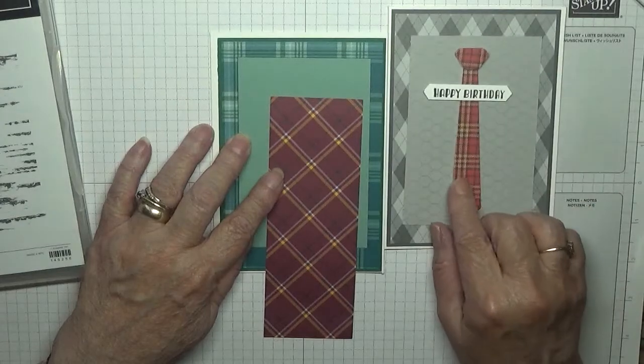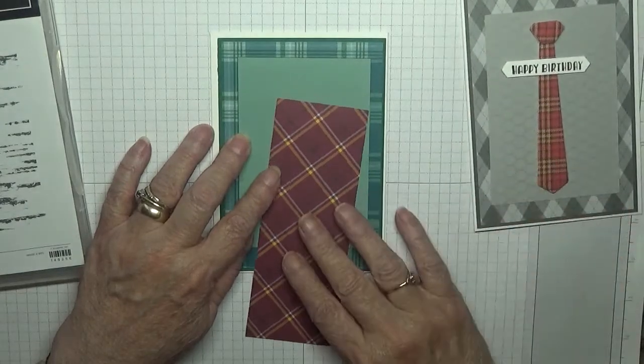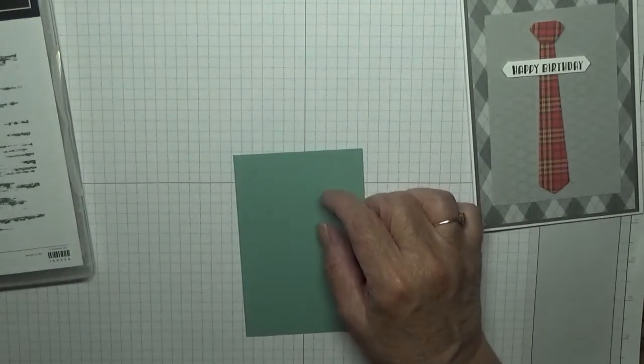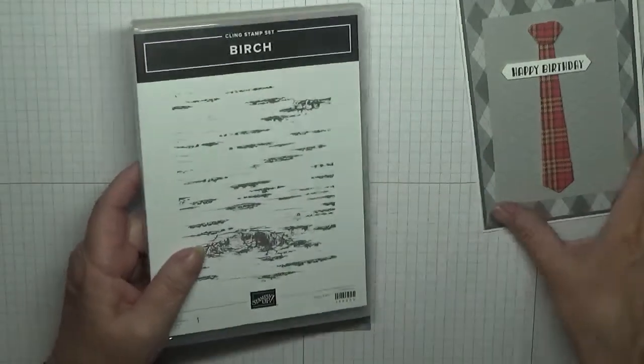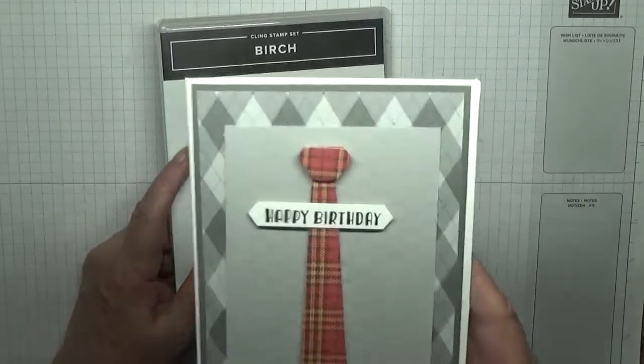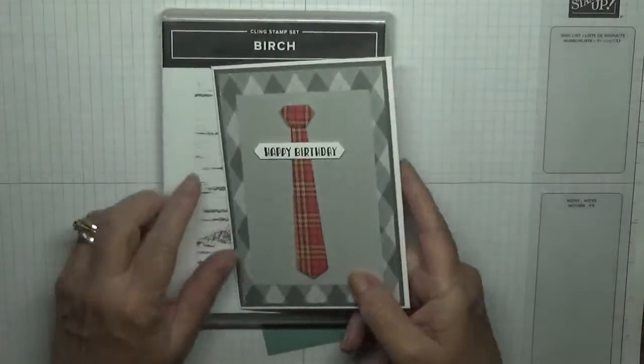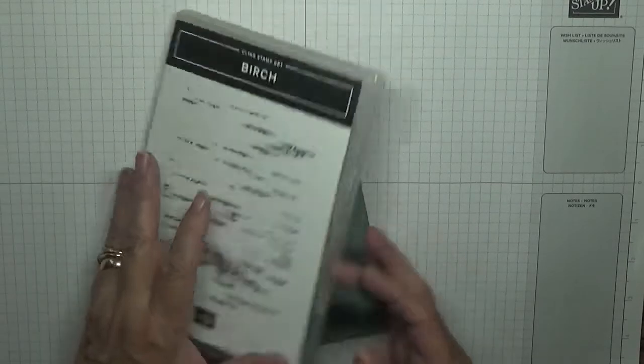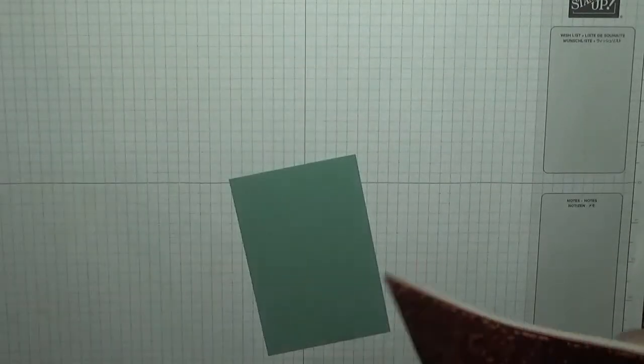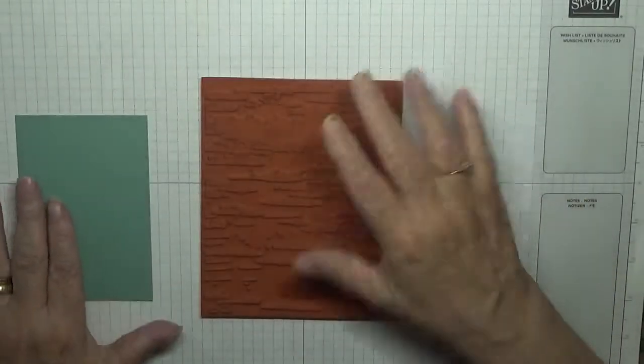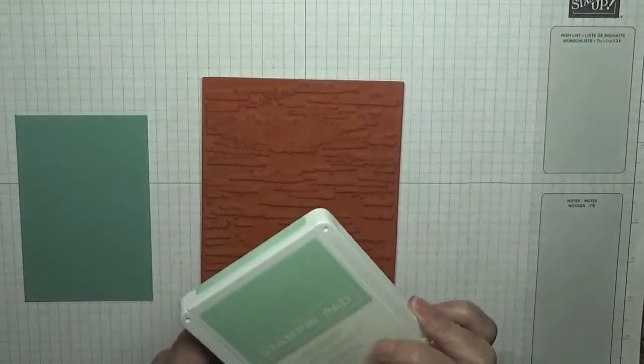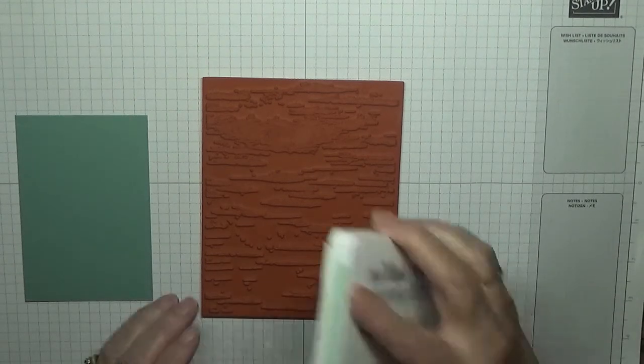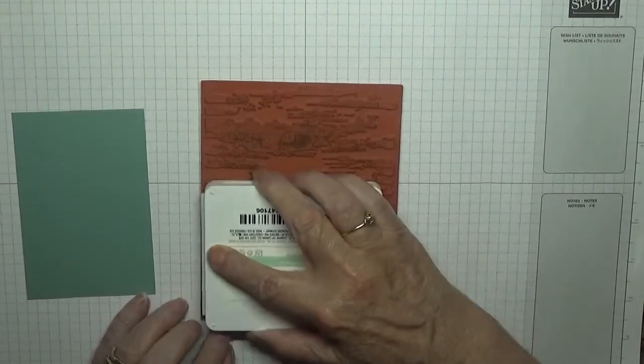This is to cut the tie out. We need to stamp on this background, which I'm going to use this stamp Birch on. This one I used all wide up, and this one I'm going to use Birch. I haven't used that for ages. There's some mint macaron ink, another ink I haven't used for ages. Ink it up.